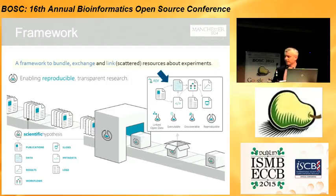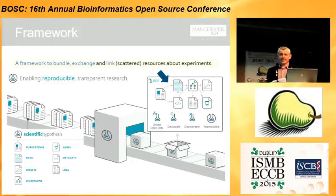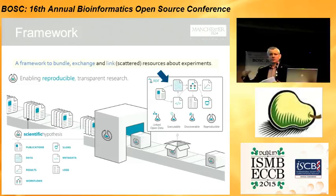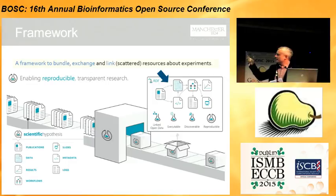Research objects are basically a framework for being able to bundle, exchange and link scattered resources and assets that might be around the web or that you use in your day-to-day work in the lab. So you can take publications, data, results, workflows, slides, metadata, logs, codes, Docker — whatever you're using — and bundle that all up into something which can be linked, executable, discoverable and reproducible.